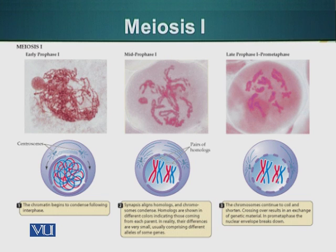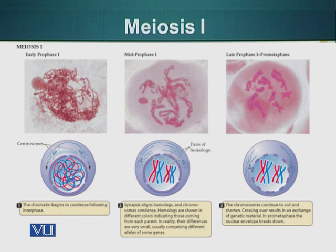In early prophase 1, the nuclear envelope is still intact, as it was in the prophase of mitosis. Although in early prophase 1 we cannot see the chromosomes as discrete structures, in mid-prophase — the next stage — we are able to see the chromosomes as discrete structures. Even at this stage, the nuclear membrane is still intact.